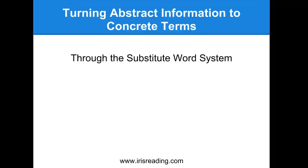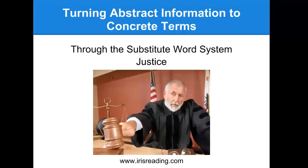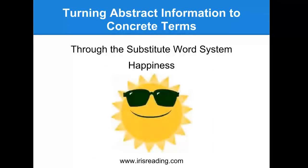We can use the substitute word to remember these abstract words. Think of liberty — you can picture the Liberty Bell, which is in Philadelphia. For justice, you can picture a judge, since justice and judge are related terms. For happiness, we can picture a sun that's smiling. When it's sunny outside, I feel more energized and happy — especially on a beautiful day like today here in Chicago. Think about how the substitute word system can be useful to break down abstract words.